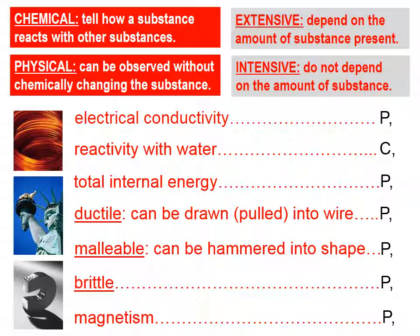Now let's look at the other side — extensive versus intensive. Extensive properties depend on the amount of substance present; intensive properties do not. Electrical conductivity: a small piece of copper will conduct and a large piece of copper will conduct, so clearly the amount of the substance doesn't affect whether the sample conducts. Therefore, electrical conductivity is an intensive property. Same with reactivity with water — a small amount will react and a large amount will react, so that is also an intensive property.